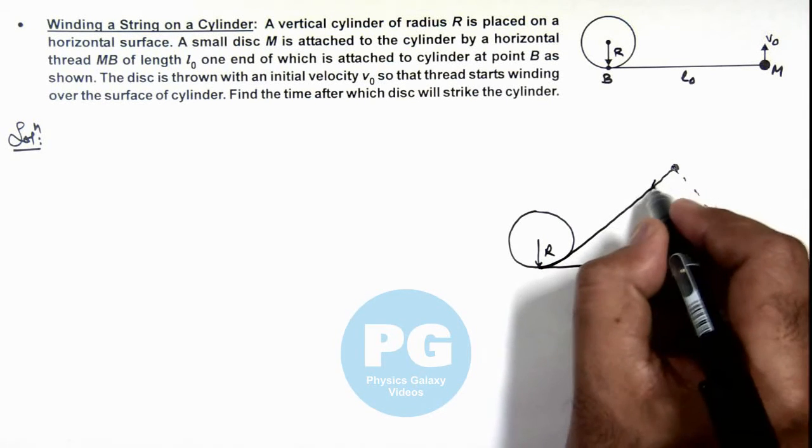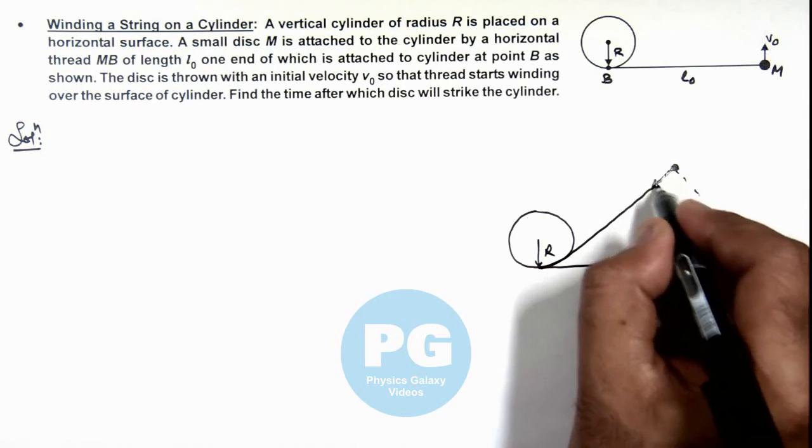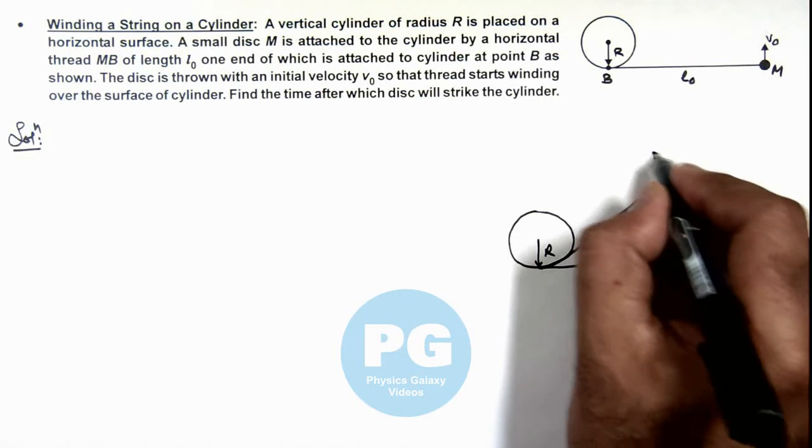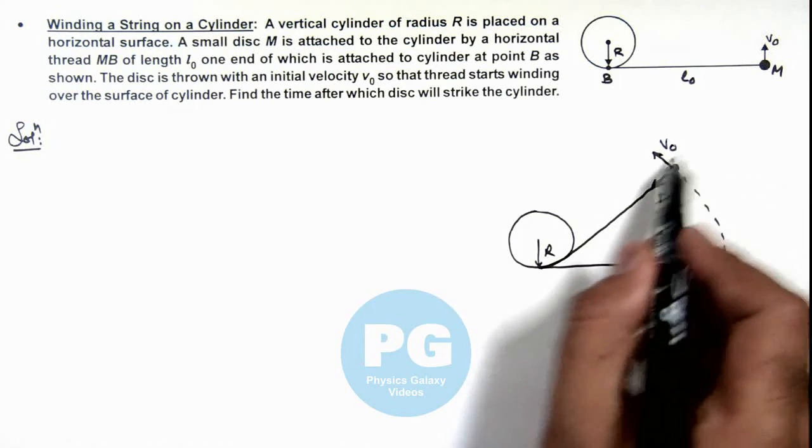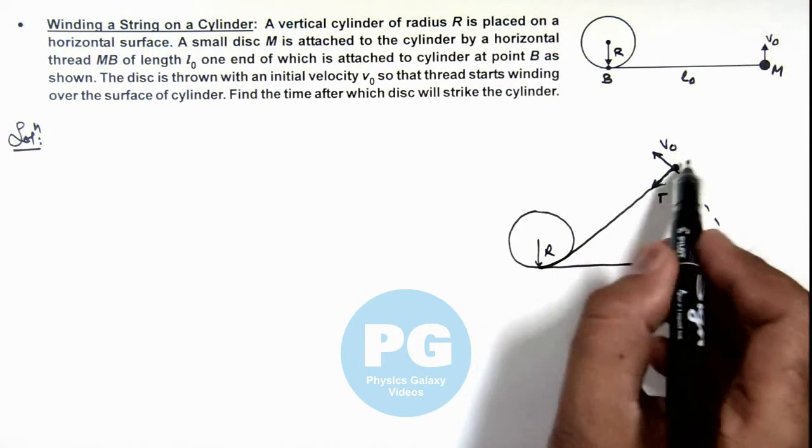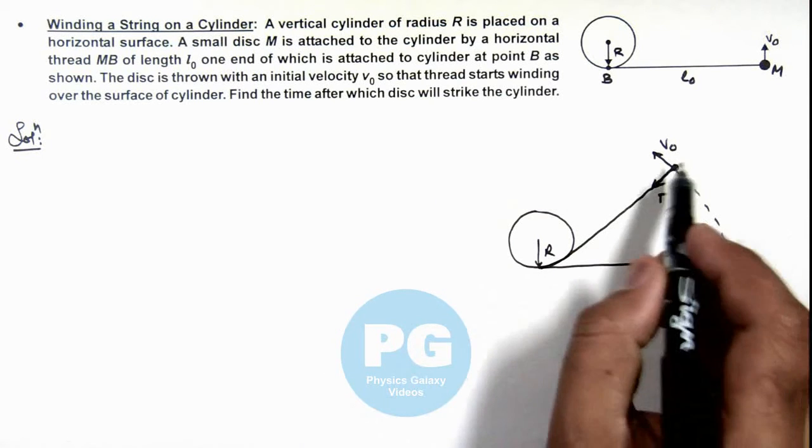Here we can see as tension in the string is acting normal to its velocity v₀, the magnitude of velocity v₀ will not change; it will continue to move at uniform speed v₀.